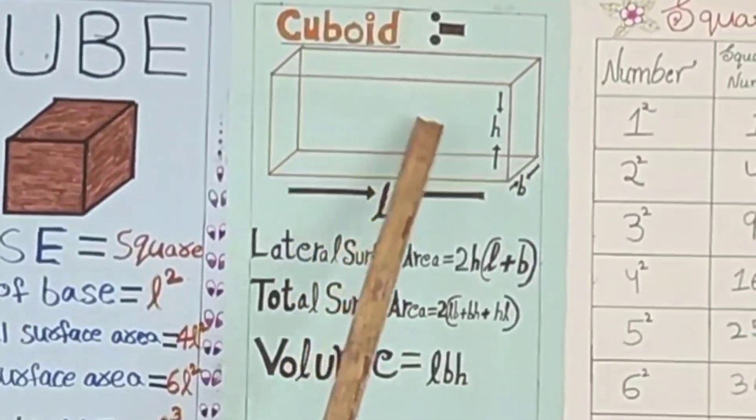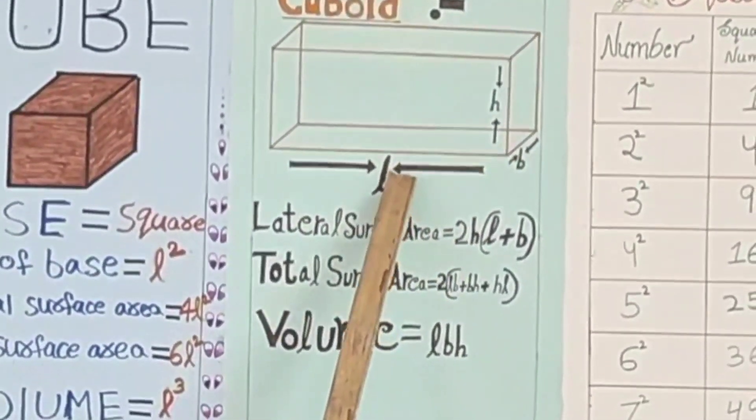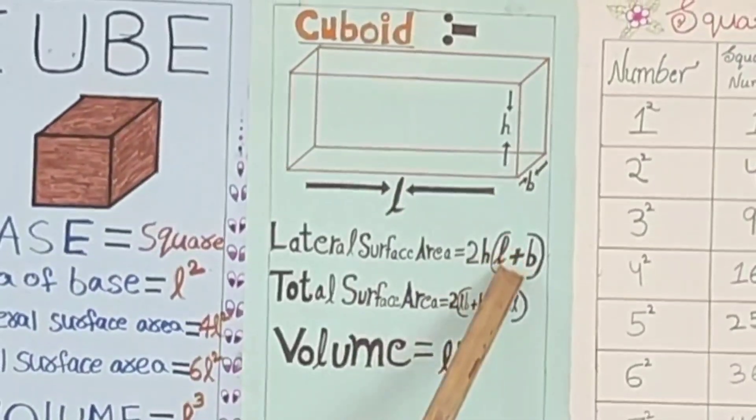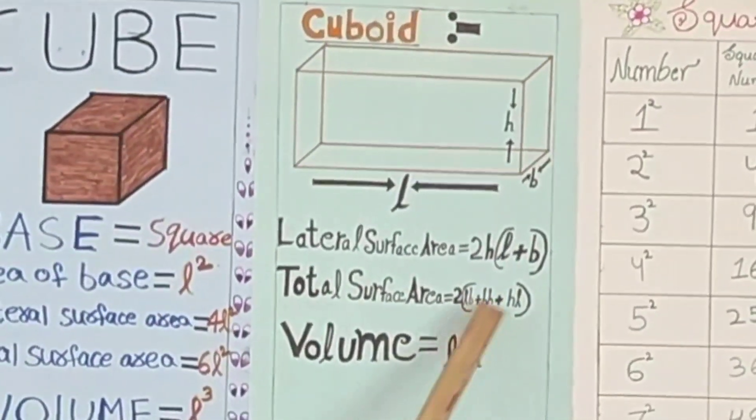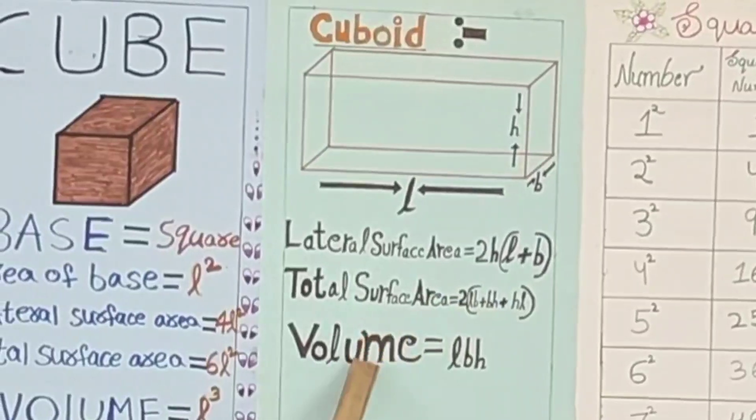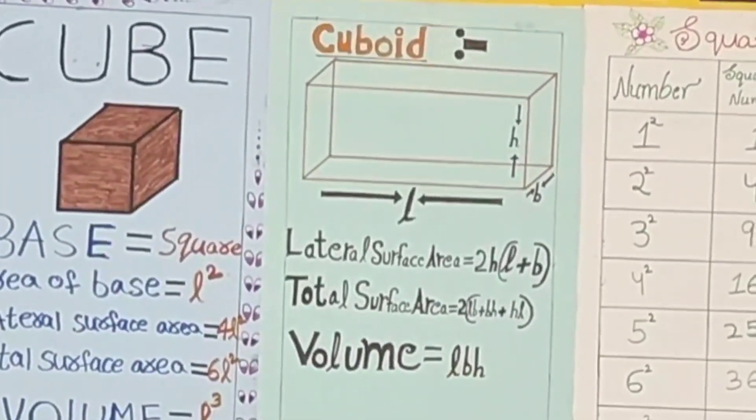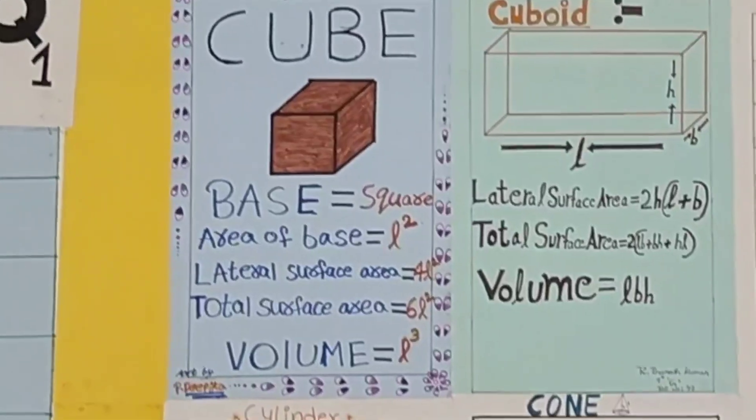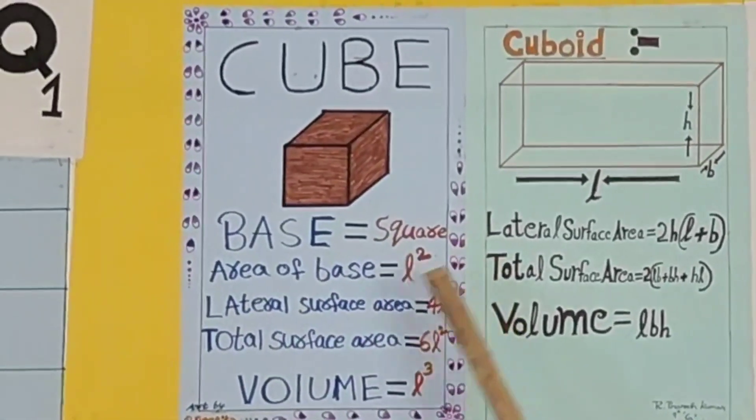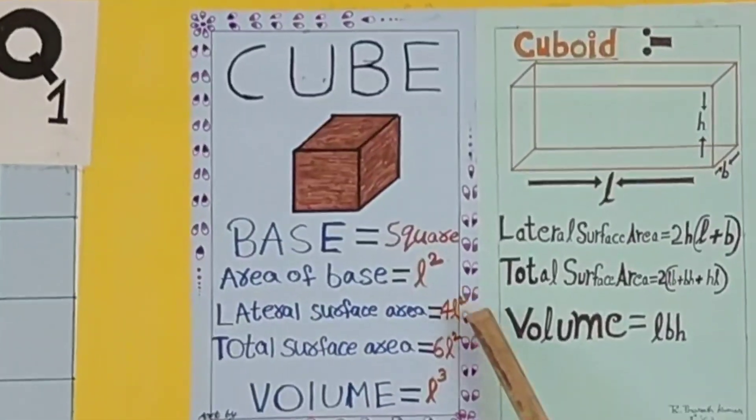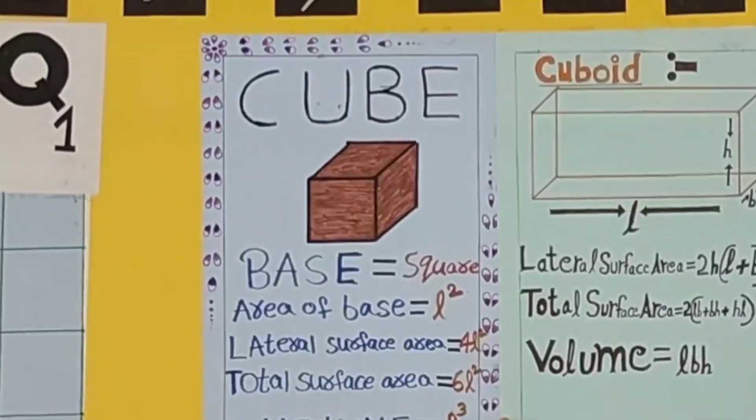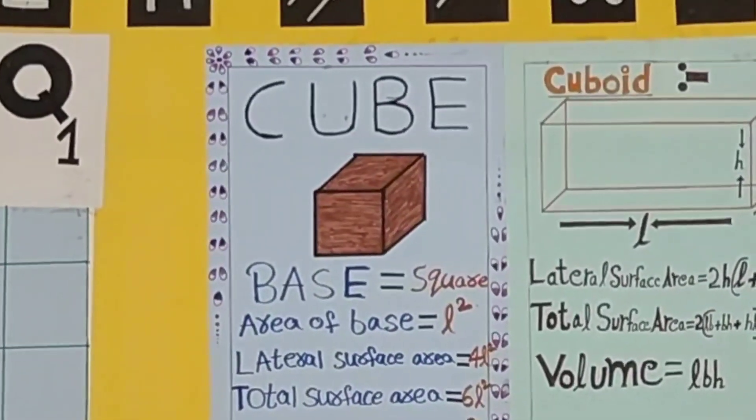This is a three-dimensional figure. Measurements are length, breadth, height. Lateral surface area: 2H into L plus B. Total surface area: 2 into LB plus BH plus HL. Volume: L into B into H. This is a cube. This is a three-dimensional figure. Base: square. Area of base: L square. Lateral surface area: 4L square. Total surface area: 6L square. Volume: L cube.